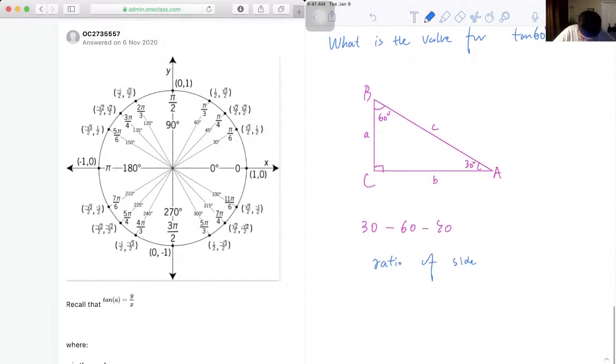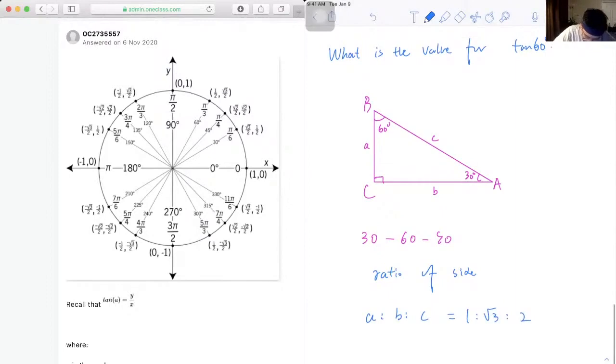So that ratio of sides, a to b to c, is going to be equal to 1 to √3 to 2. So let's say a is x, so c will be 2x, and b will be √3x.